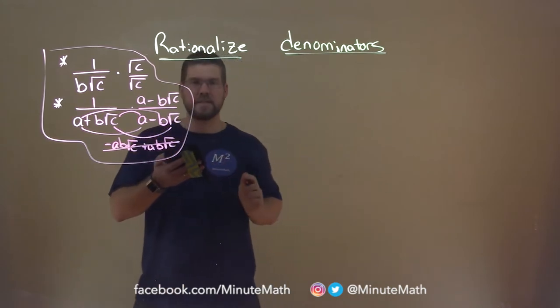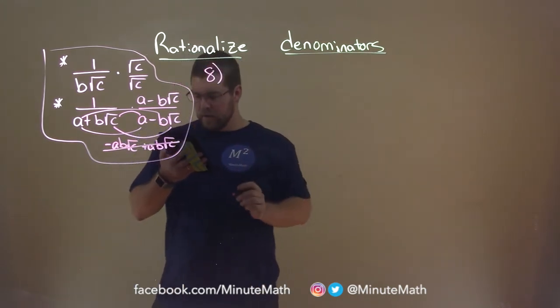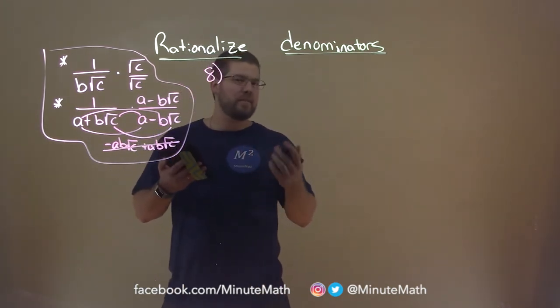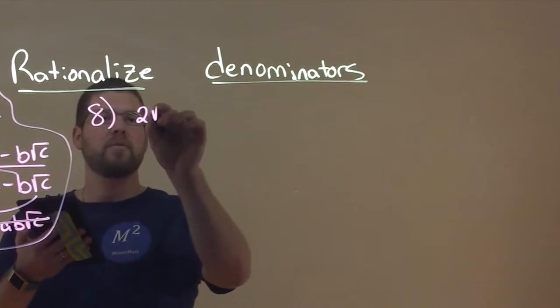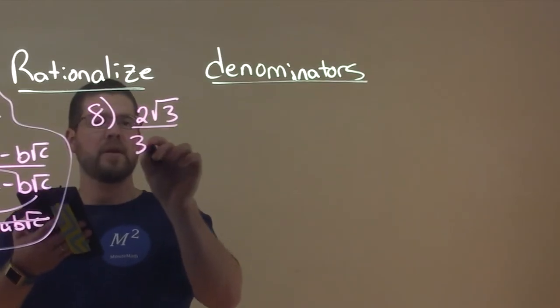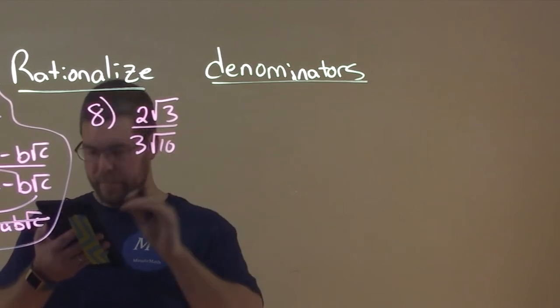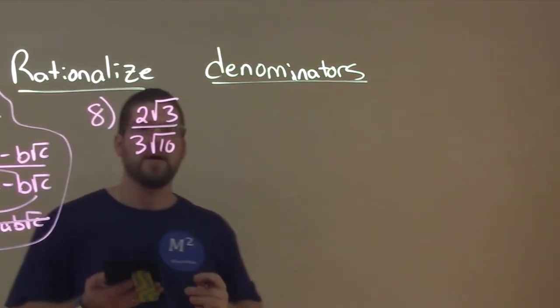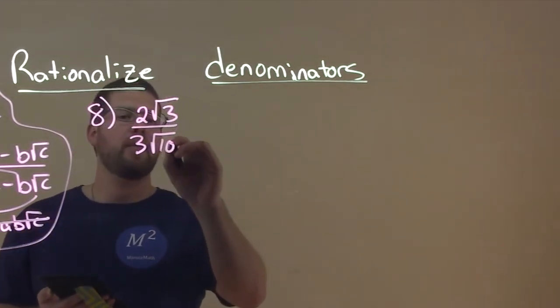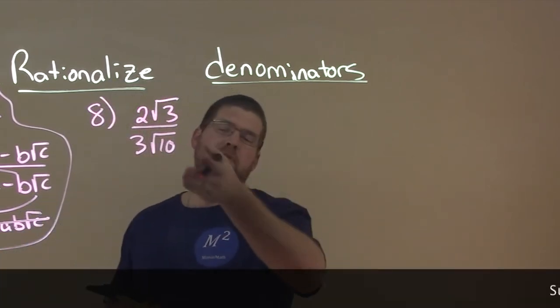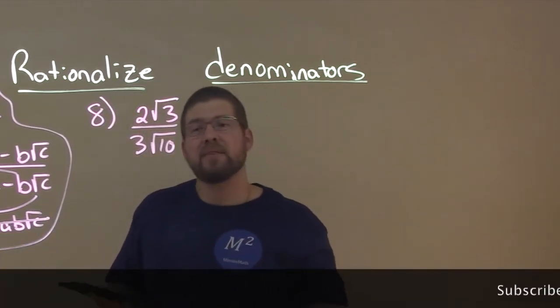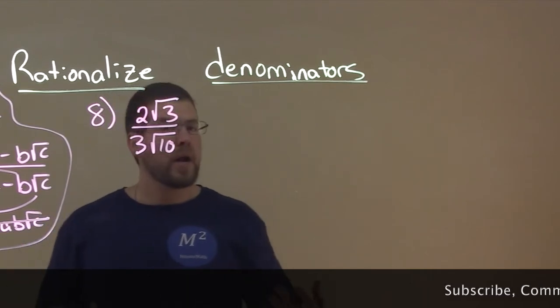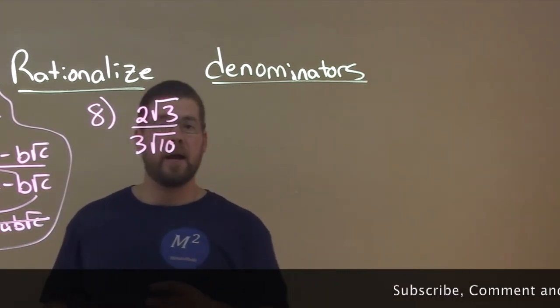Let's do a couple examples. We want to write this in simplest form: 2 square root of 3 over 3 square root of 10. Now again here, I don't like having square roots in the denominator. First thing, I try to see if there's a way to like anything that just cancels out and nothing really. So what I'm going to try to do is get that square root out of the denominator.